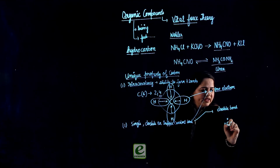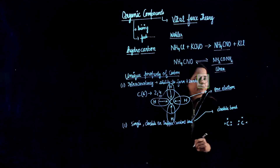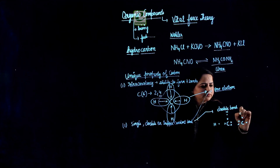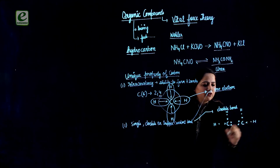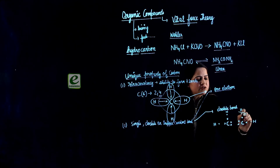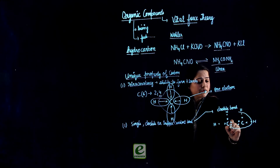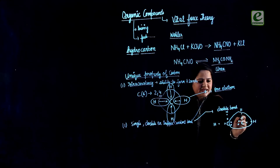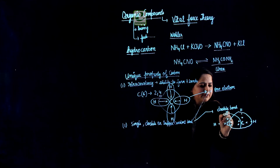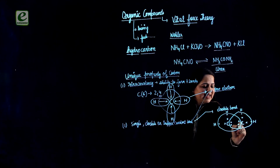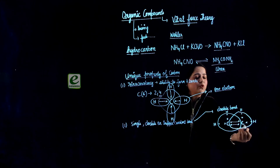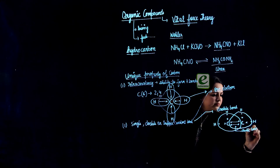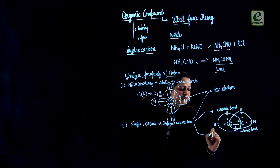If we talk about a double bond, carbon shares two electrons. For example, consider two carbon atoms each with four electrons. Each carbon shares one electron with a hydrogen, and then the two carbons share two electrons with each other. This results in the sharing of two electrons between the carbons, which forms a double bond.